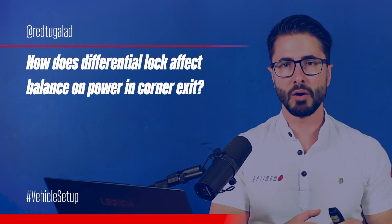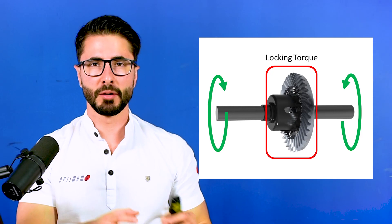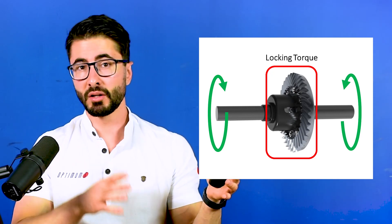How does differential lock affect balance on power in corner exit? In simple terms, more differential lock means more locking torque — basically how much torque the differential can sustain between left and right sides. For corner exit, more locking torque makes the differential capable of transferring more torque to the outside tire if the system is asking for it. As you are going back on throttle and you are above the preload, you should be shifting more of the torque to the outside tire, generating more rotation. However, this is not an active differential, meaning the torque is not automatically transferred to the outside tire — it only means that if the dynamic system is asking for more torque on the outside tire, the differential can provide that, typically giving more oversteer behavior or more rotation. Once the differential reaches, say, 60–70% throttle and is already locked, increasing the locking torque even further will not change anything.